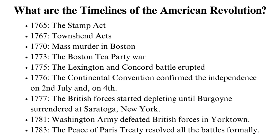1776: the Continental Convention confirmed independence on the 2nd of July, and on the 4th, adopted the Declaration of Independence, written by Thomas Jefferson. This document affirmed that the American colonies under British authority were free. 1777: the British forces started depleting until Burgoyne surrendered at Saratoga, New York.